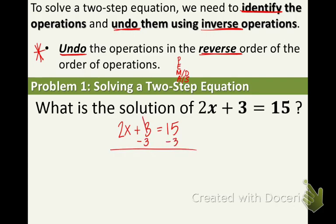Now that goes away. We have 2x left and we have 12 on the right side. The only operation that's involved is multiplication. The way that we undo multiplication is we divide. Divide by 2 on both sides. The 2's go away. X equals, what's 12 divided by 2? That's 6.